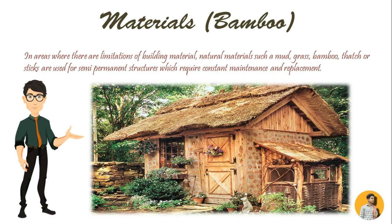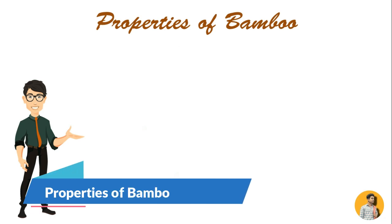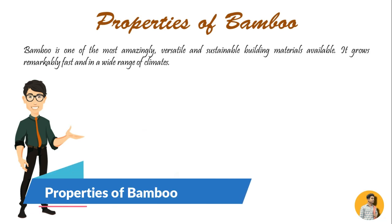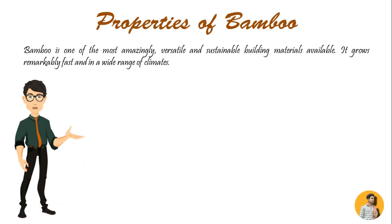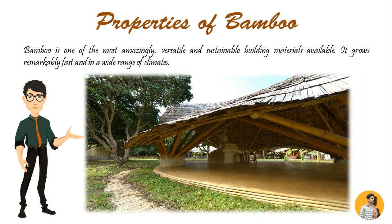Properties of Bamboo: Bamboo is one of the most amazingly versatile and sustainable building materials available. It grows remarkably fast across a wide range of climates. It is extremely strong for its weight and can be used both structurally and as a finished material. It is extremely resistant to traction and torsion and has similar elastic properties. Due to its size, lightness and resistance, bamboo is an exceptional product of nature.